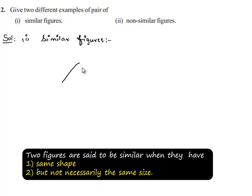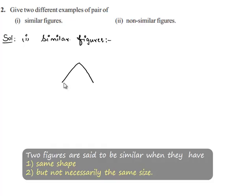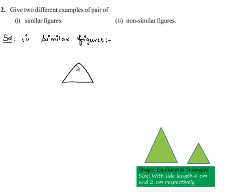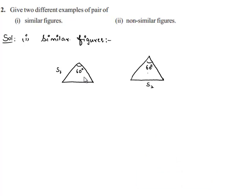If we consider two equilateral triangles with included angle 60 degrees each with side S1 and other equilateral triangle with the same included angle 60 degrees, but let us assume that side is some S2. Here, these two figures are said to be similar because the shape obtained is same but the size of the triangles are different.